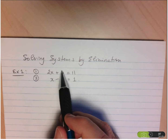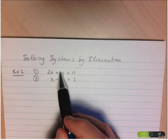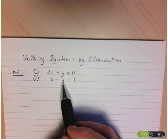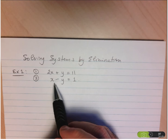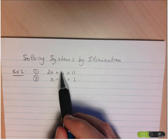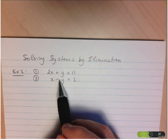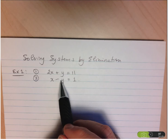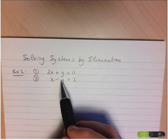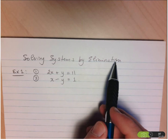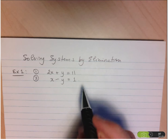Here I notice I have a y and a negative y. If I were to add these two together, y plus negative y gives y minus y, which equals 0. So I would succeed in eliminating one of the variables.